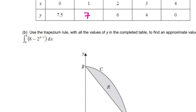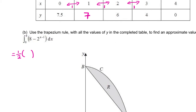We're going to do the integral equals a half lots of H. H is our width — essentially the difference between our X values. The difference between 0 and 1 is 1, between 1 and 2 is 1, between 2 and 3 is 1. You'll notice all of these have a difference of 1, so H equals 1.